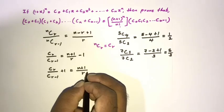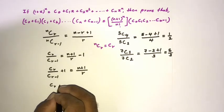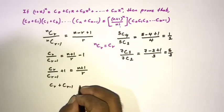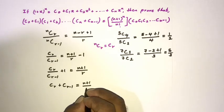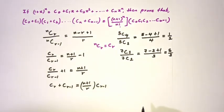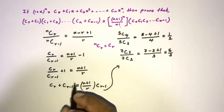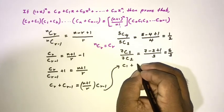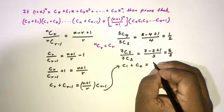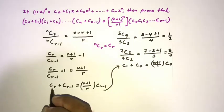Taking a common denominator on the left: (Cr + C(r-1)) / C(r-1) equals (n + 1) / r. Multiplying both sides by C(r-1): Cr + C(r-1) = (n + 1)/r times C(r-1). Now substituting r = 1: C1 + C0 = (n + 1)/1 times C0.